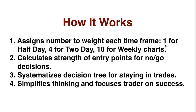The half day we assign the number 1. The two day we assign the number 4, because it's four half days. And the weekly we assign 10, because they're five days — that means ten half days. So: 1 for the half day, 4 for the two day, 10 for the weekly. This calculates the strength of entry points to help you make a go or no-go decision. It also systematizes decision trees for staying in trades and simplifies thinking, focusing you on success.